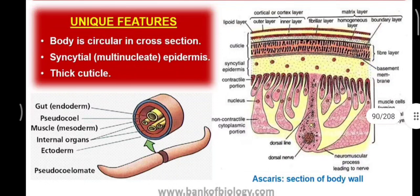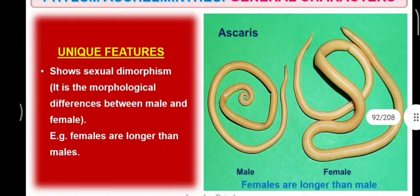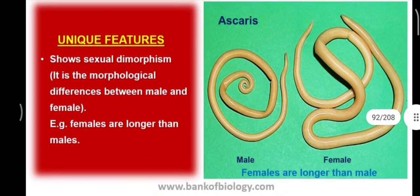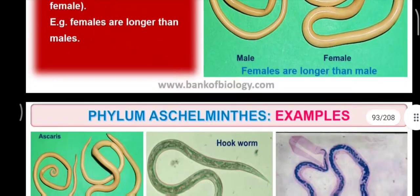The unique features of Aschelminthes are: the body is circular in cross-section, hence the name roundworms. The epidermis is syncytial in nature, which means it is multinucleated. It is covered by a thick cuticle. Excretory tubes remove body waste through an excretory pore — a small pore through which waste is eliminated. They show sexual dimorphism, meaning males and females are differentiated by certain characters. Females are generally longer than males, and the male posterior part is curved.